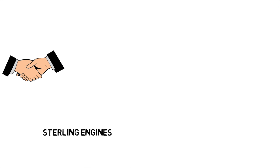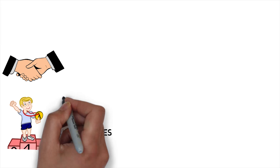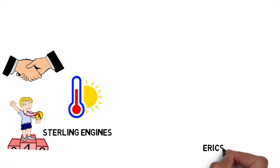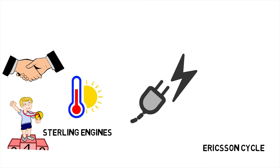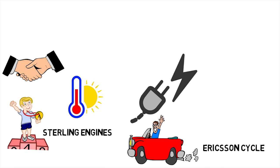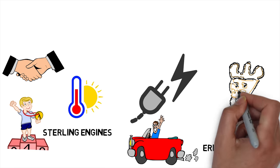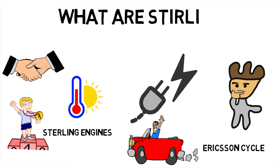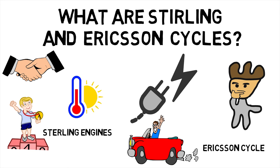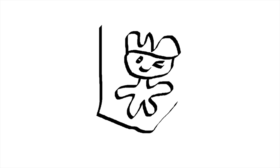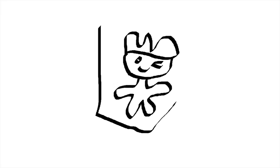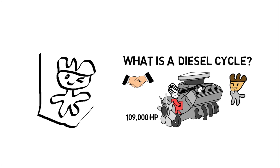Welcome back to Mechanical AI. Did you know that Stirling engines hold the record for running at the lowest temperature difference? An Ericsson cycle is used to extract power from the exhaust heat of gasoline engines. This makes us wonder: what are the Stirling and Ericsson cycles? Check out the previous part of this series to learn about the diesel cycle.